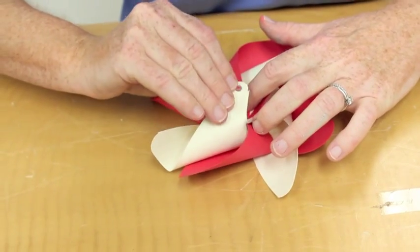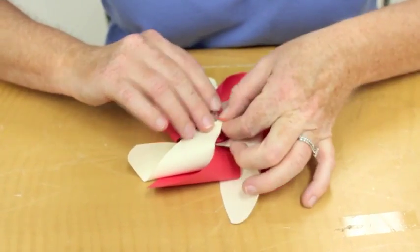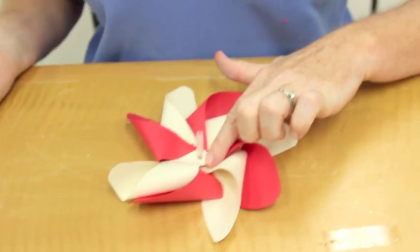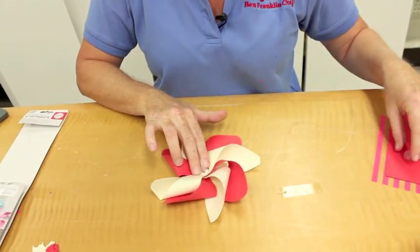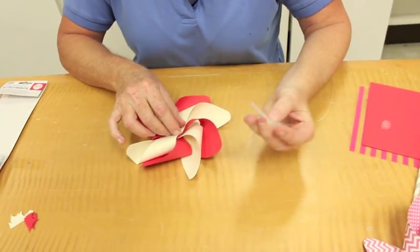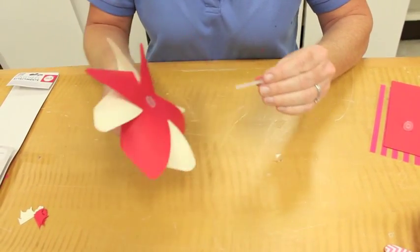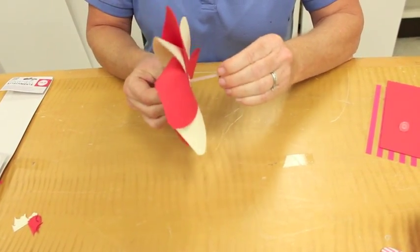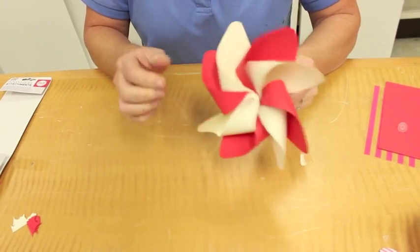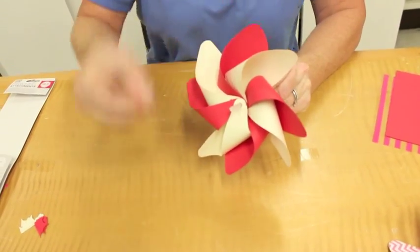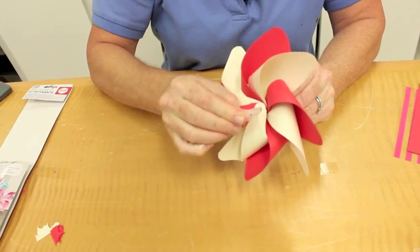Next, I'm going to take this part. This is where the straw goes in. This will go through the center. Push that in. It locks in. We'll put this little cap on top and then the straw on the bottom.